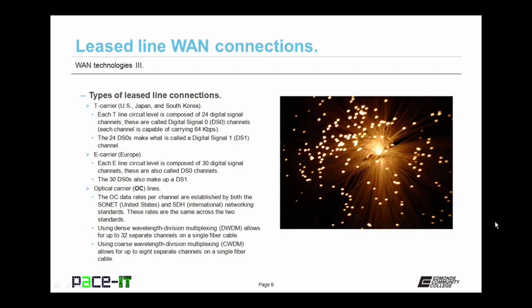When talking about fiber optic speeds, we often talk about optical carrier lines, or OC lines. The OC data rates per channel are established by both the SONET and SDH networking standards — SONET is the United States standard and SDH is the international standard. The OC rates are the same across both standards. It's possible to multiplex multiple channels into the same fiber using Dense Wavelength Division Multiplexing — DWDM — which allows for up to 32 separate channels on a single fiber cable, or Coarse Wavelength Division Multiplexing, which allows for up to 8 separate channels.